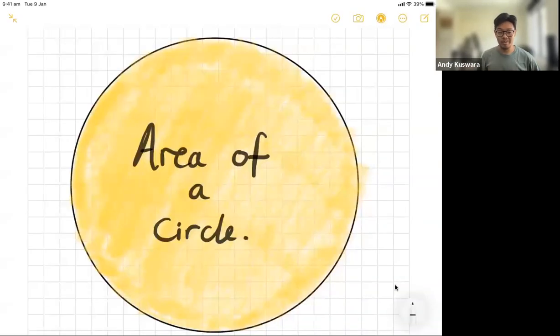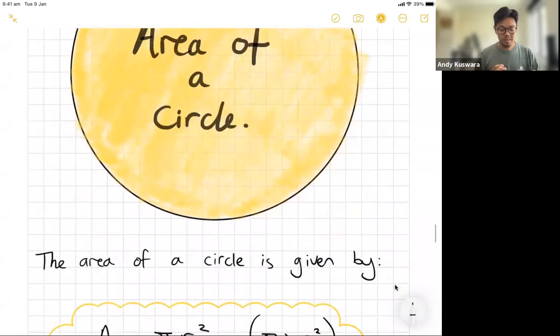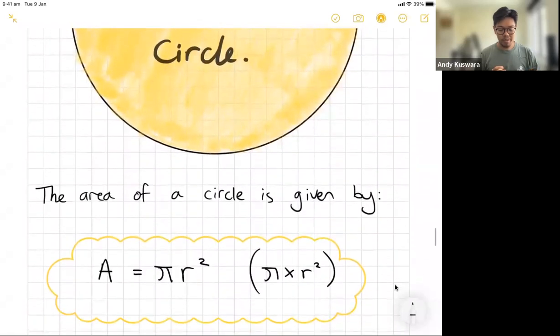So we've learned how to find the circumference, we've learned how to find the diameter and radius, we've learned how to move forwards and backwards. Today we're actually going to find the area of the circle. Area is slightly different - we're not trying to find a length, we're trying to actually find the amount of 2D space it holds.